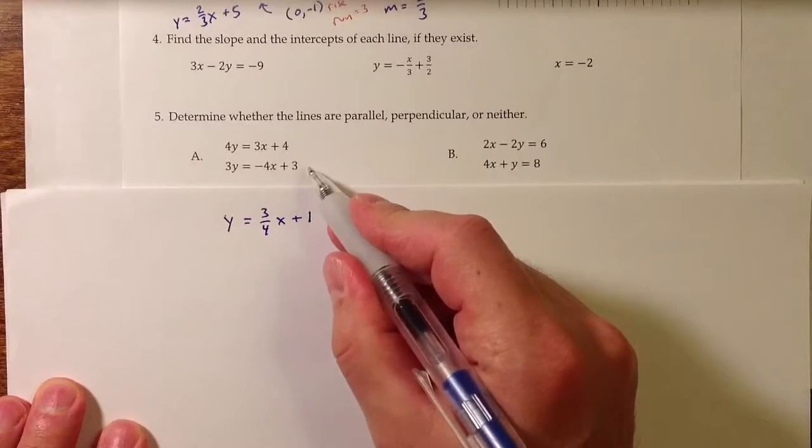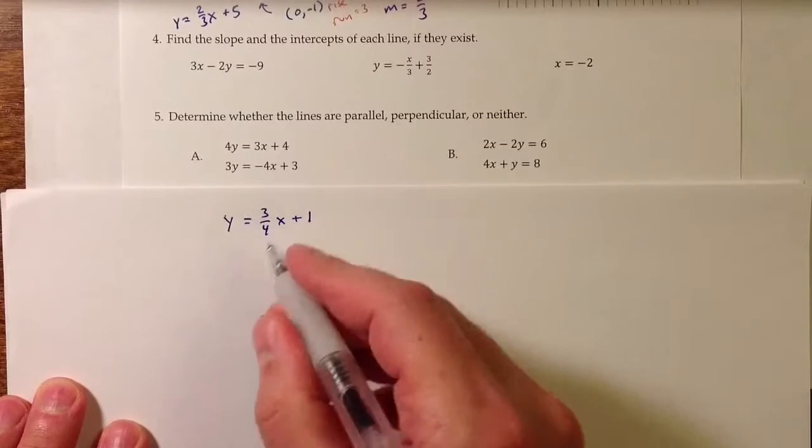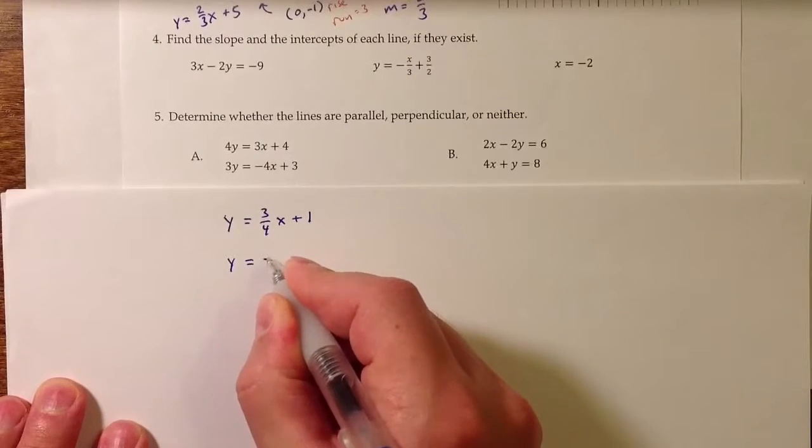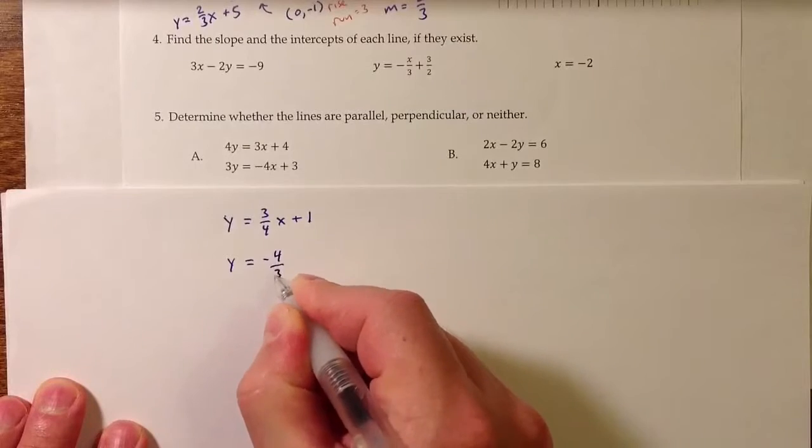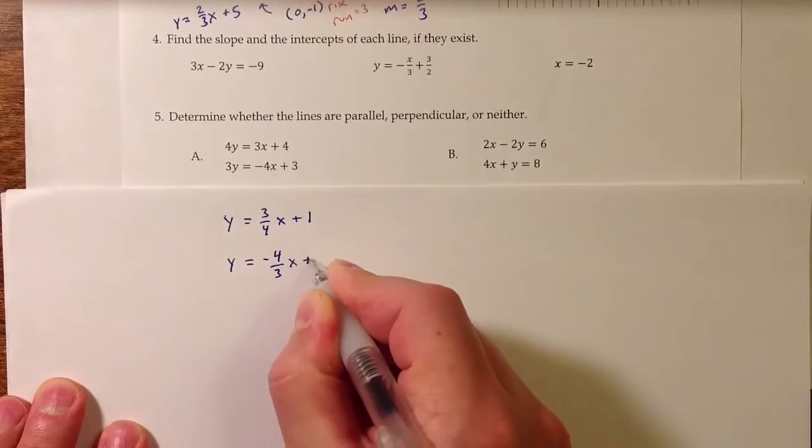And with the second equation, if I divide everything by 3, I end up with y equals negative 4 divided by 3x plus 1.